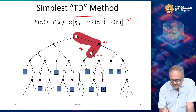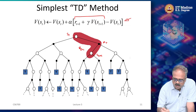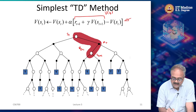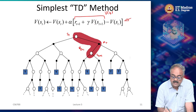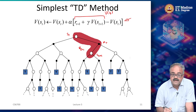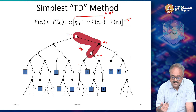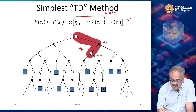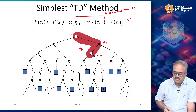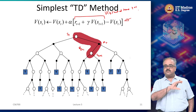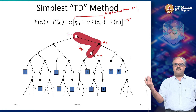This quantity is an estimate of V(S_t). At time t, I take an action, I get a reward R_{t+1}, and then I go to the next state S_{t+1} and compute V(S_{t+1}) from there. So this is essentially an estimate of V(S_t). This is an estimate of V(S_t), but computed at time t+1, because I need to know what S_{t+1} and R_{t+1} are — so I should have moved forward to time t+1.